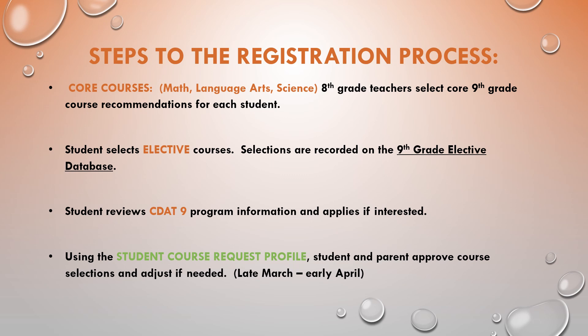We'll begin by looking at the steps to the registration process. Over the next few months, the following things will take place. The first being core course recommendations, and those are in math, language arts, and science. A student's current 8th grade teacher will select the 9th grade course recommendation for each student. After that is complete, students will select their elective courses, and those selections will be recorded on the 9th grade elective database.